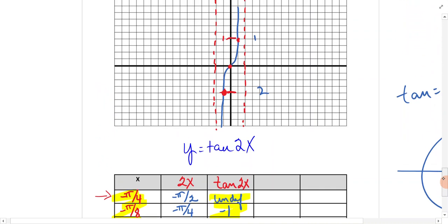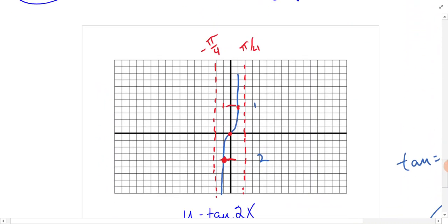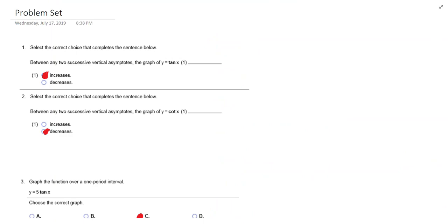I think that gets us going. Let's go look at our problem set. Select the correct choice. Between any two successive vertical asymptotes, is the graph of y equals tan x increasing or decreasing? Remember, you have your dotted lines and your tangent is doing that, so it's increasing. For cotan, you have your dotted lines and it's coming down that way, so it's decreasing.